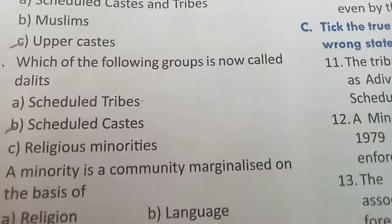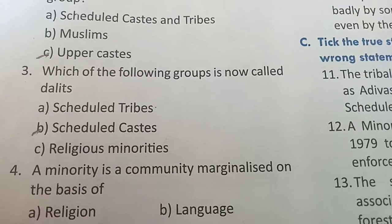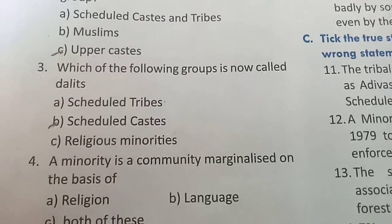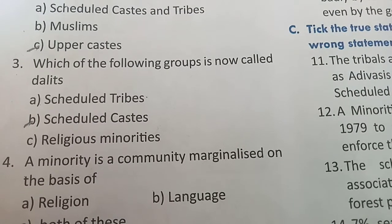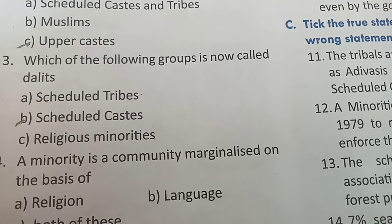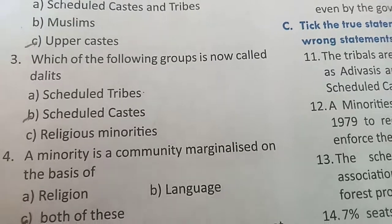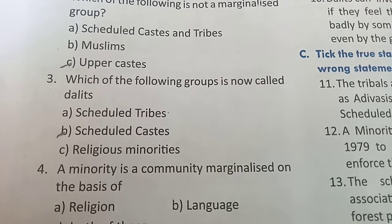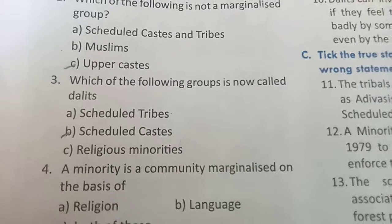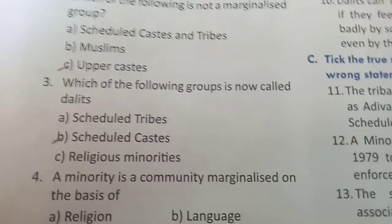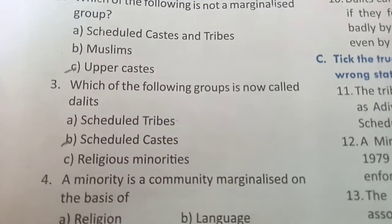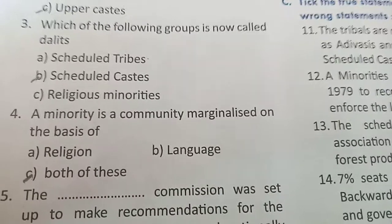The third MCQ: which group is now called Dalits? Options are Scheduled Tribes, Scheduled Castes, or religious minority. The official name given in India to the lowest caste is Dalit, and this is Scheduled Caste. So the answer is Scheduled Castes.